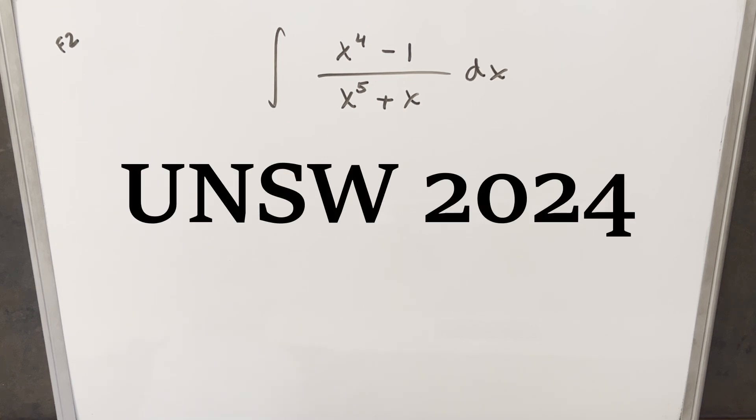Okay, we have here today another integral. This one's from the UNSW integration B 2024, finals number two. We have the integral of x to the fourth minus one over x to the fifth plus x dx.